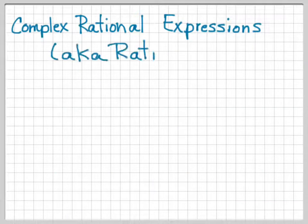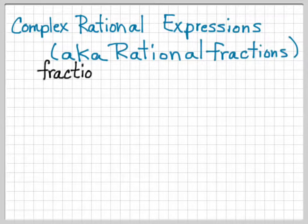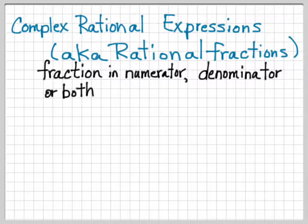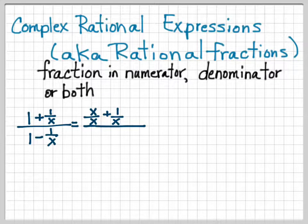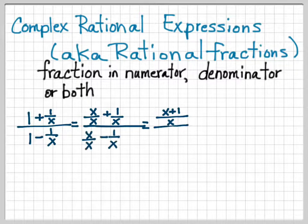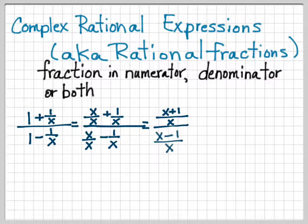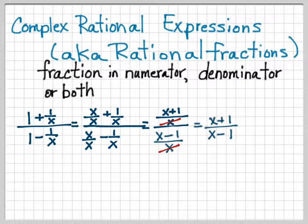Complex rational expressions, also known as rational fractions, are fractions that have a fraction in the numerator, in the denominator, or both. For example: (1 + 1/x) over (1 − 1/x). In the numerator, the common denominator is x, so 1 becomes x/x, giving us (x + 1)/x. In the denominator, same common denominator x, so 1 becomes x/x, giving (x − 1)/x. Since both the numerator and denominator have the same denominator x, they cancel, leaving (x + 1)/(x − 1).